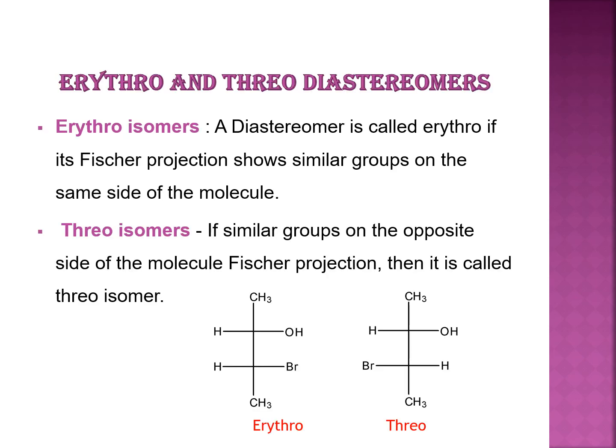Now, erythro and threo diastereomers. A diastereomer is called erythro if its Fischer projection shows similar groups on the same side of the molecule. In the threo form, similar groups are on the opposite side of the Fischer projection. In the erythro example both hydrogen groups are on the same side, and in the threo form both are on the opposite sides.